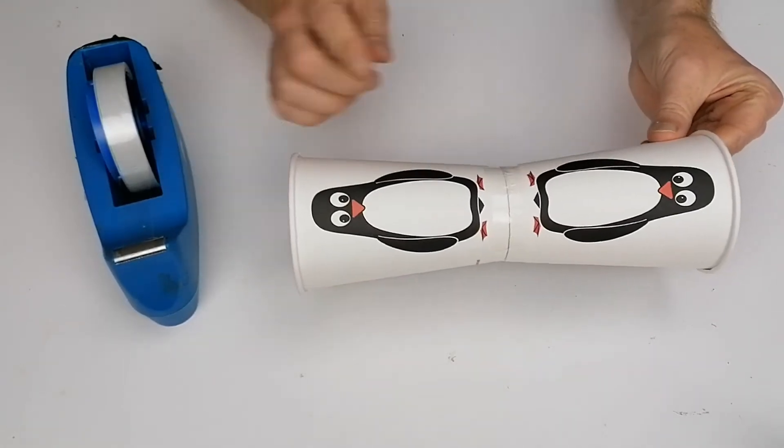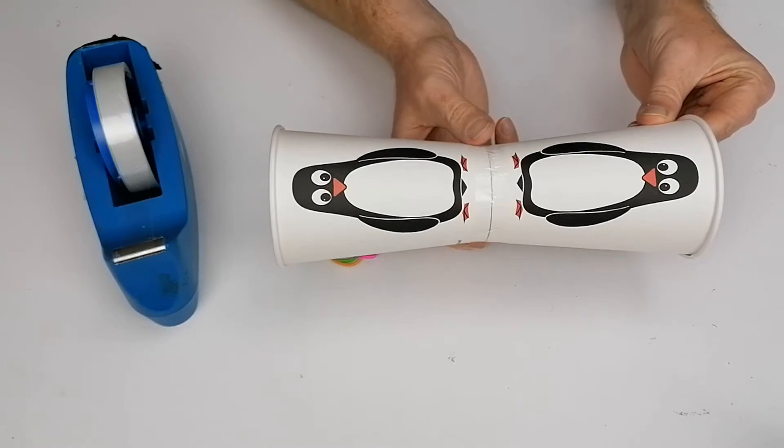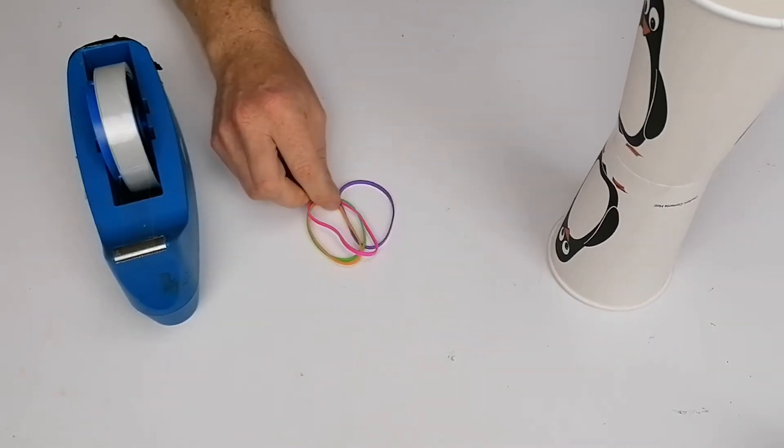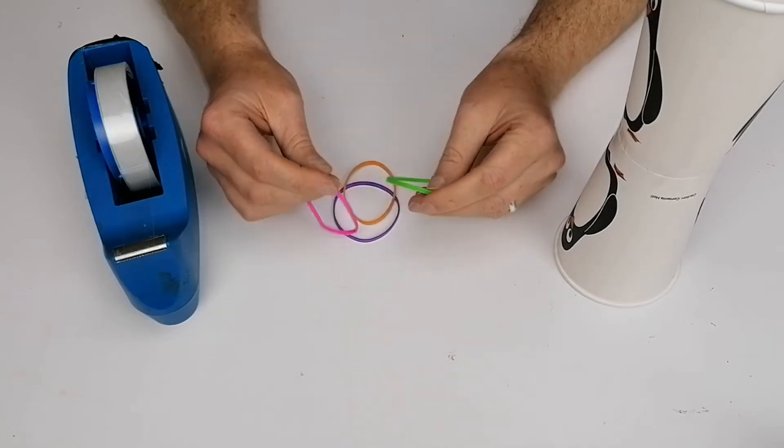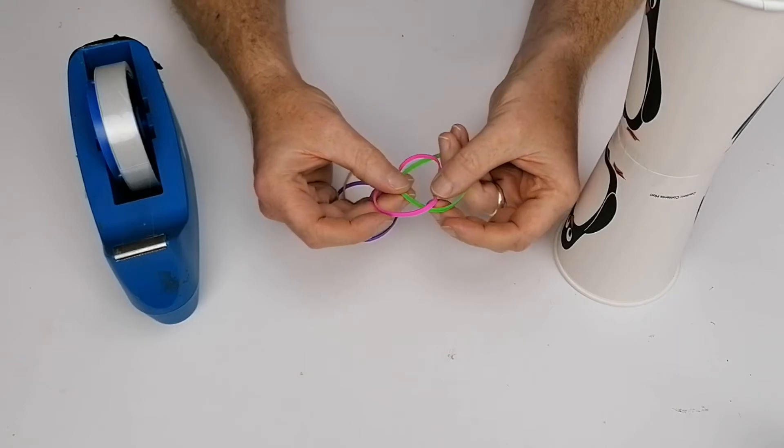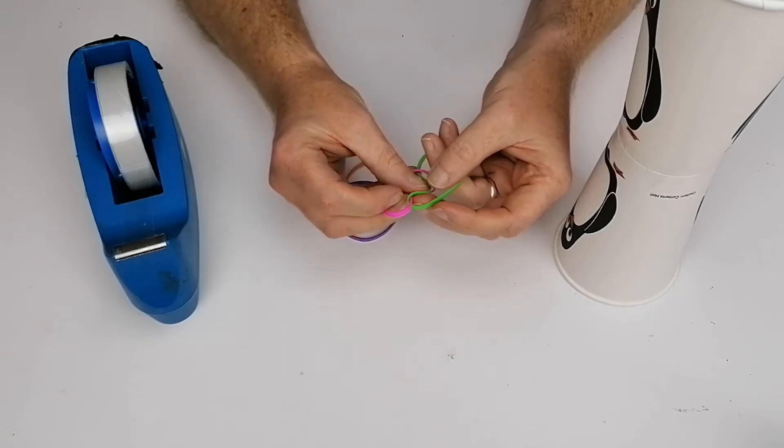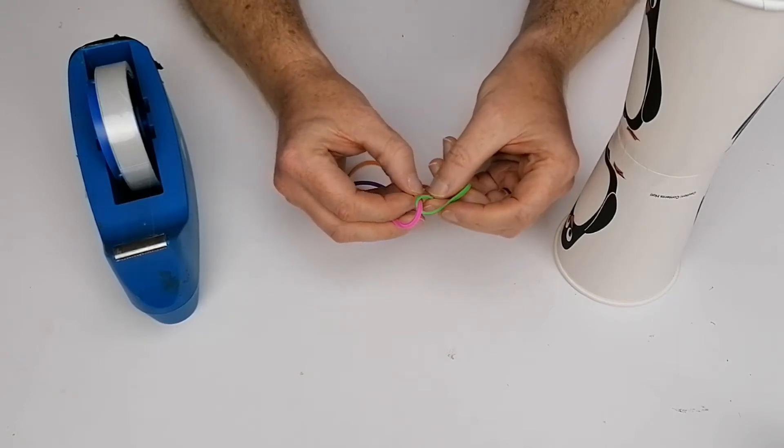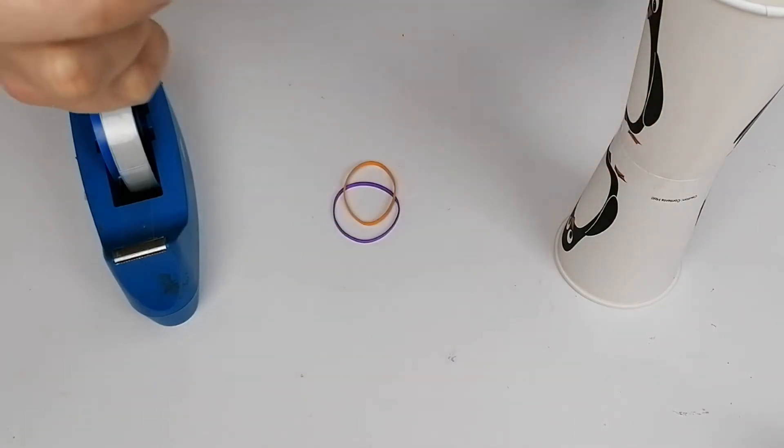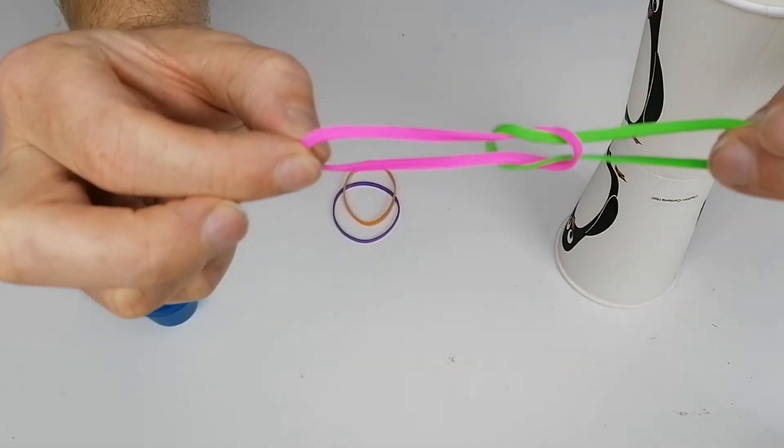The way this works now is we're going to get our elastic bands and wind them around this part of the coffee cups. To do that, you're going to take the two elastic bands and then you put them overlapping like that, and then you pull this part of the elastic band through the other elastic band and then pull so you get that kind of a knot.